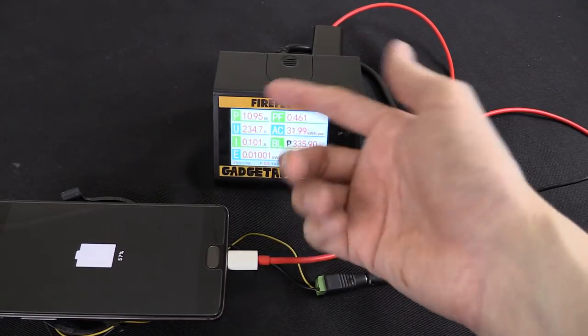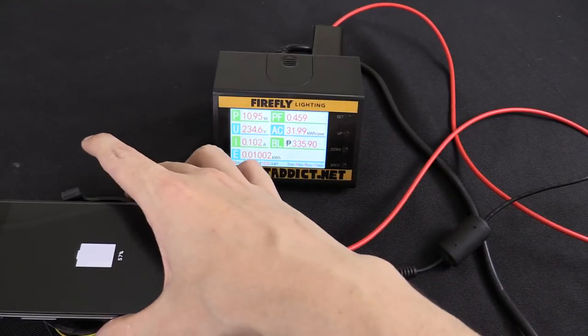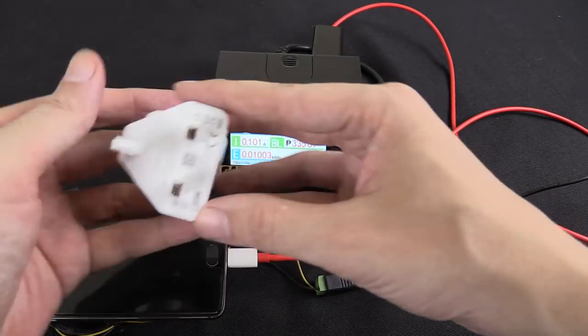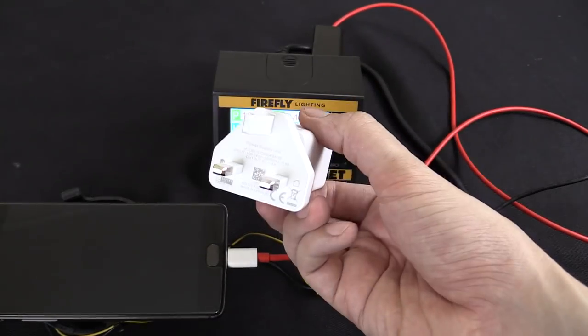Now that's basically 2 amp. So 5 volt, 2 amp, around 10 watts, a little bit higher even. So that's not too bad but it's like half the speed of using the dash charger that comes with it. So if you can use this it's going to charge much faster.